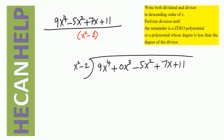What is the leading term of the dividend? It is 9x to the power of 4. And what is the leading term of the divisor? x squared. What is 9x to the power of 4 divided by x squared? 9x squared. So that's what we put here: 9x squared.